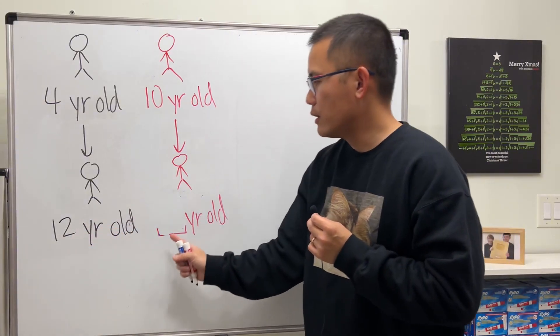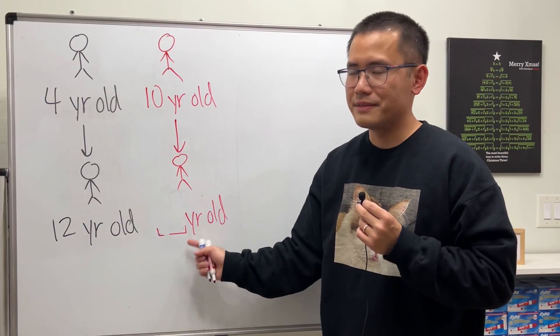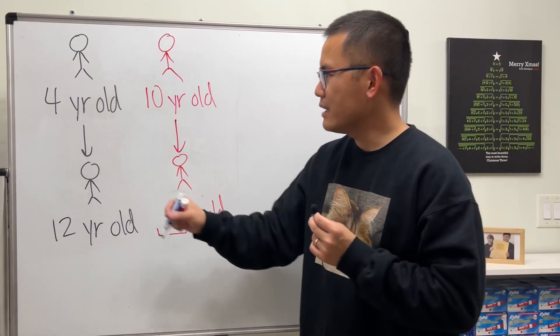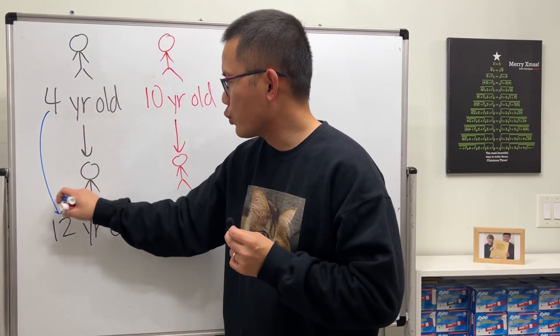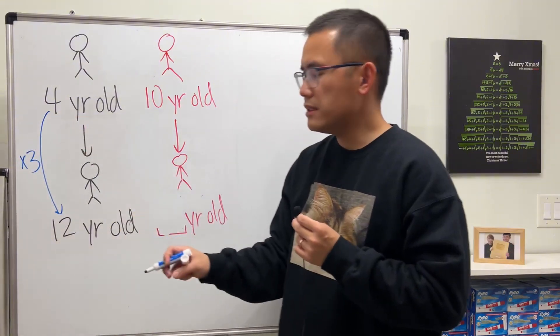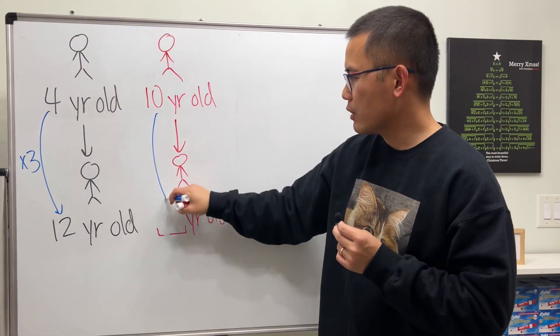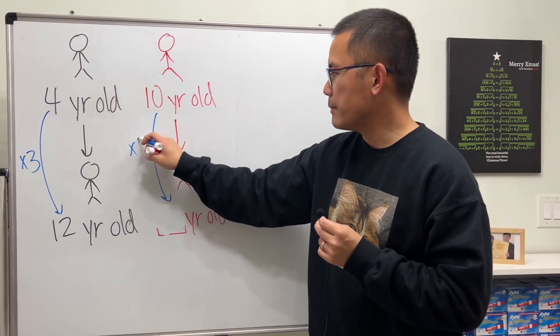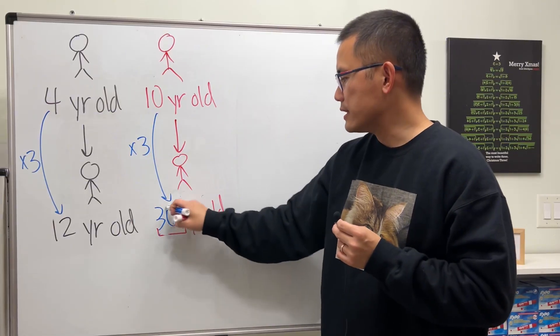Now this person is 12, we would like to know how old this person is. So it looks like we can just go from 4 to 12 by multiplying by 3, right? So let's do the same thing: 10 times 3 and we should just end up with 30 for the answer.